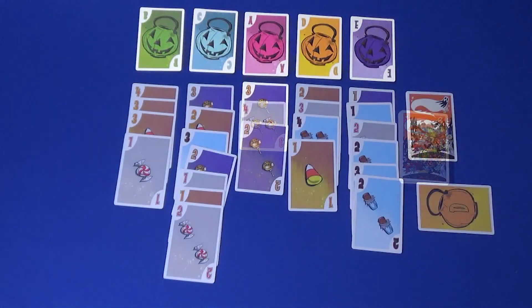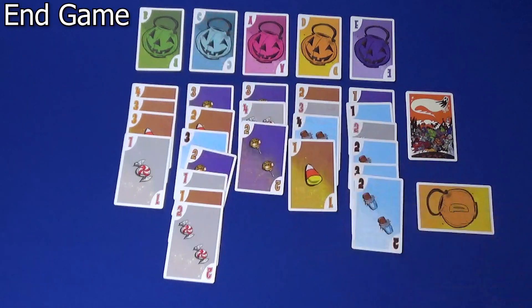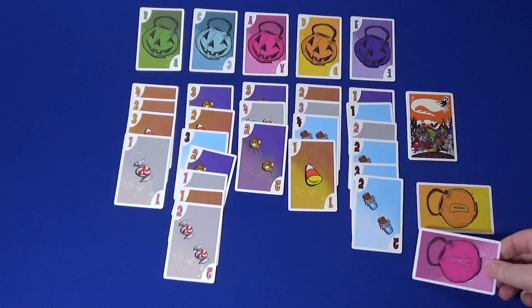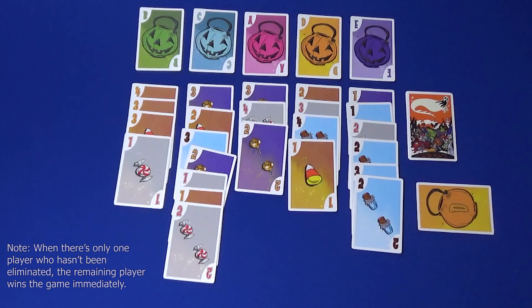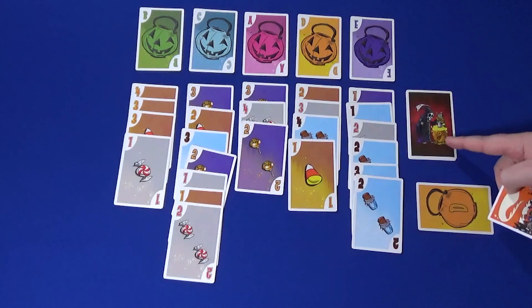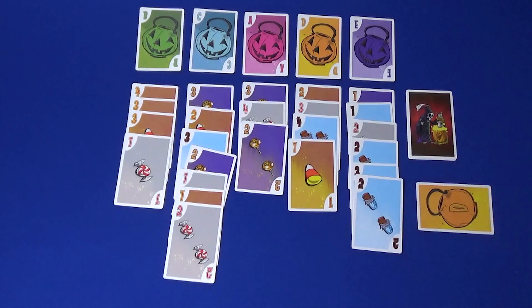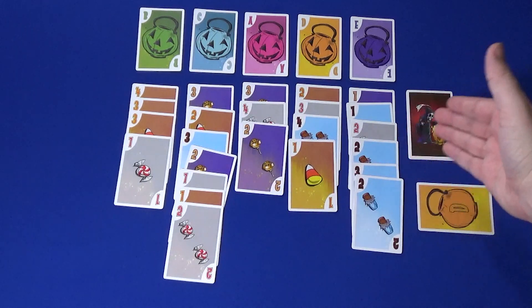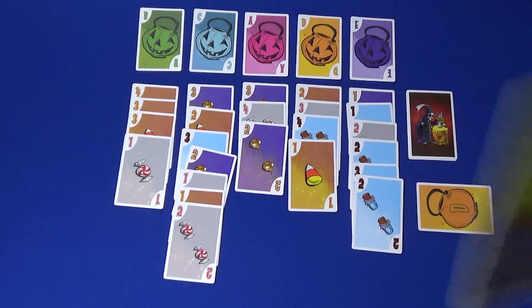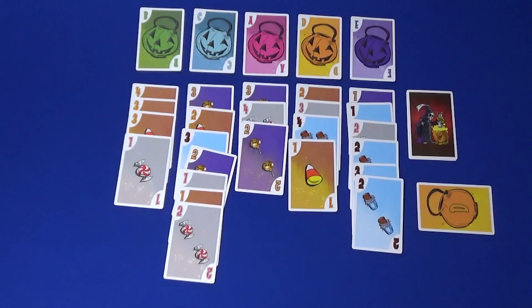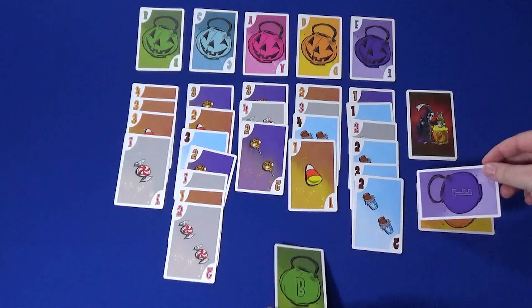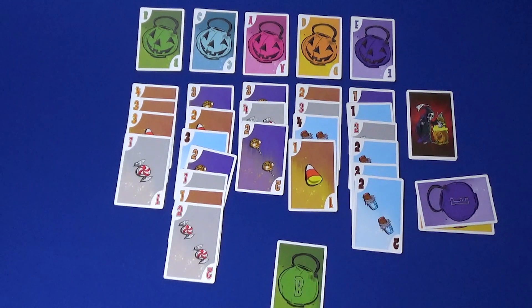The game ends in one of two ways: either there is only one player that has not been eliminated, or when the times up card is revealed as the top card of the deck. If the times up card was revealed first, then you will immediately resolve any end game effects that are on special baskets, and then everyone who is still in the game will reveal their secret letter. You will then determine your final score.